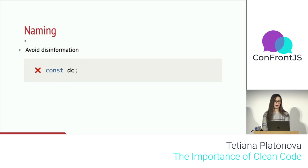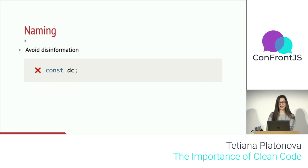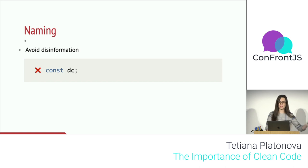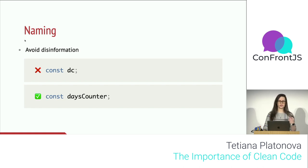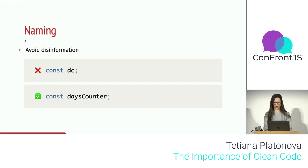Another rule: avoid disinformation. For example, 'dc' — you start to wonder what it could mean: document? data collector? There's no way to understand it without going back to the assignment. But if you call it 'daysCounter,' it gives you additional information: this variable holds a number representing some number of days for a concept, depending on the context.